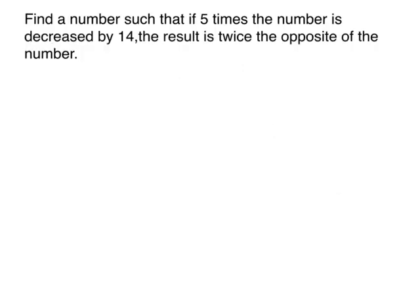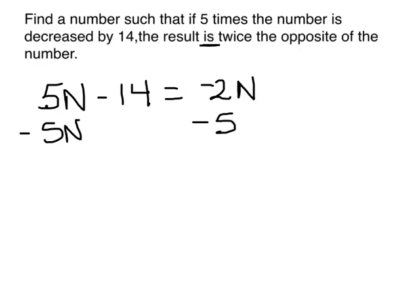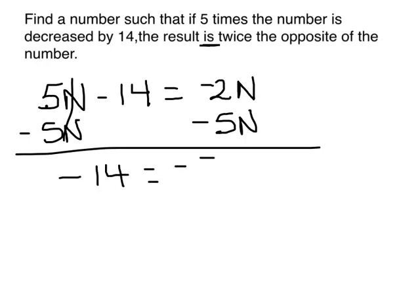Next problem. Find a number such that if 5 times the number is decreased by 14, the result is twice the opposite of the number. Here again I've got a variable on both sides. I only want to have it on one side. So I'm going to move this one over here. I'm going to have to subtract 5N from both sides to eliminate. And then I get negative 14 equals negative 7N. If I divide both sides by negative 7, I have N equals 2.